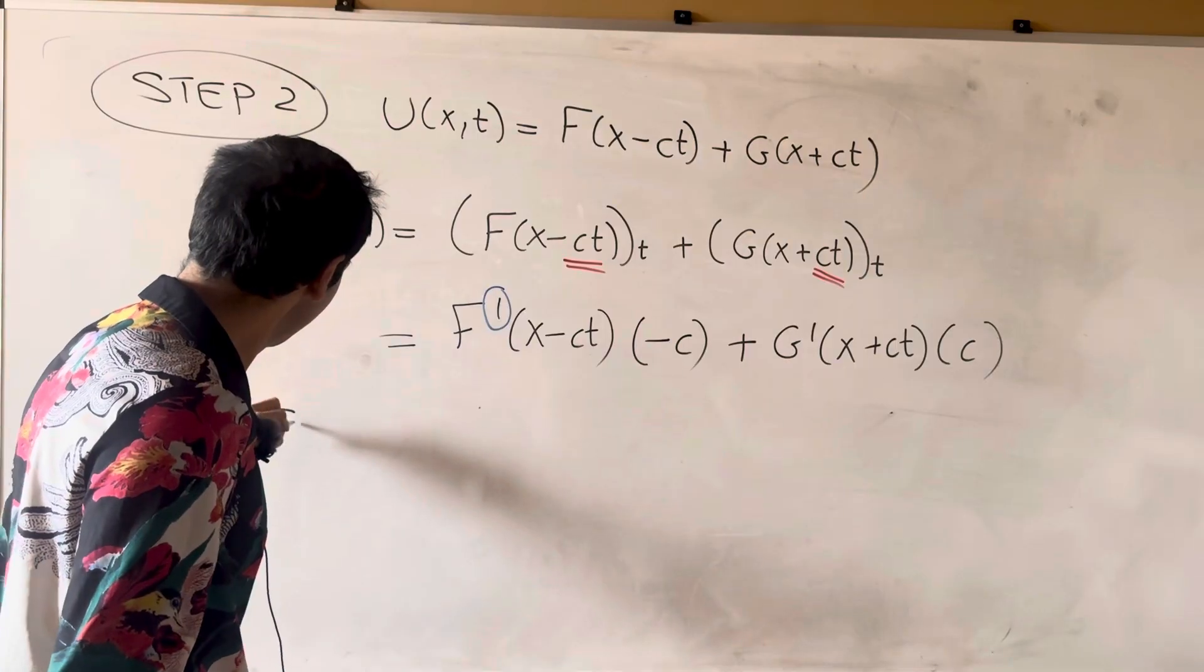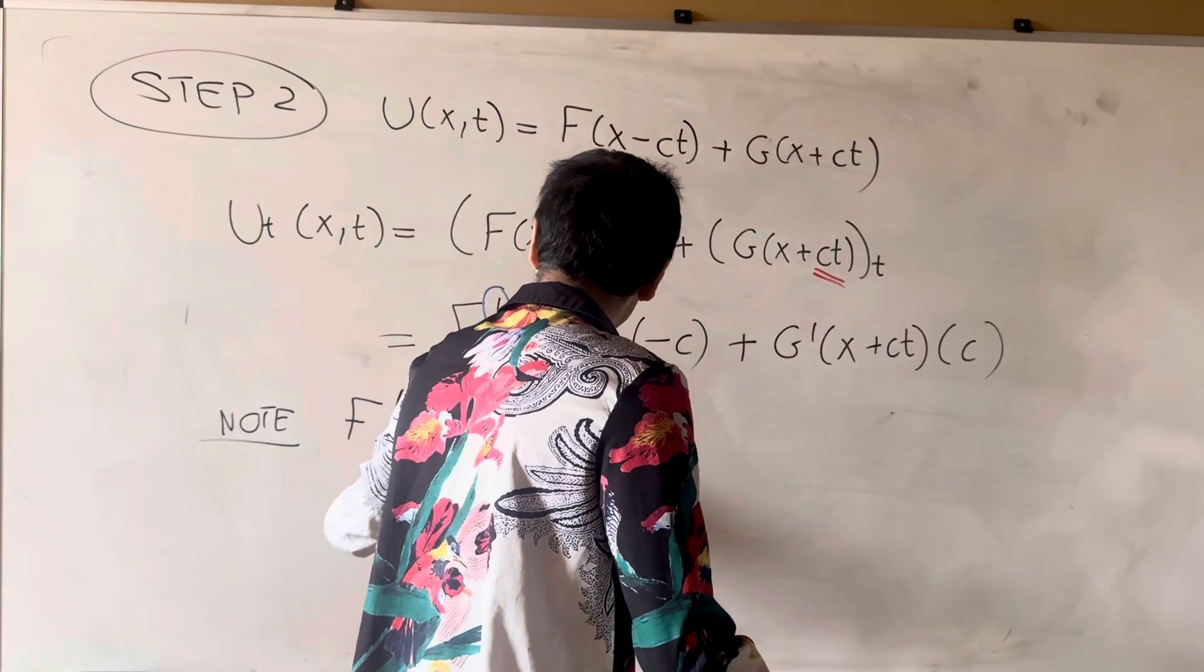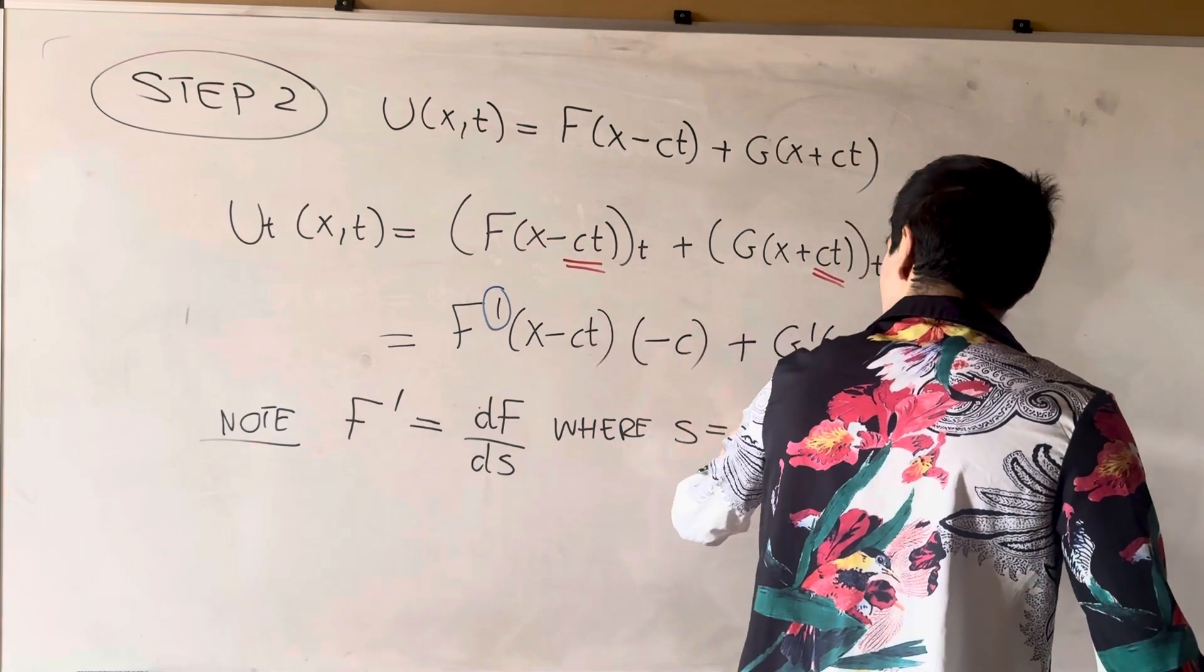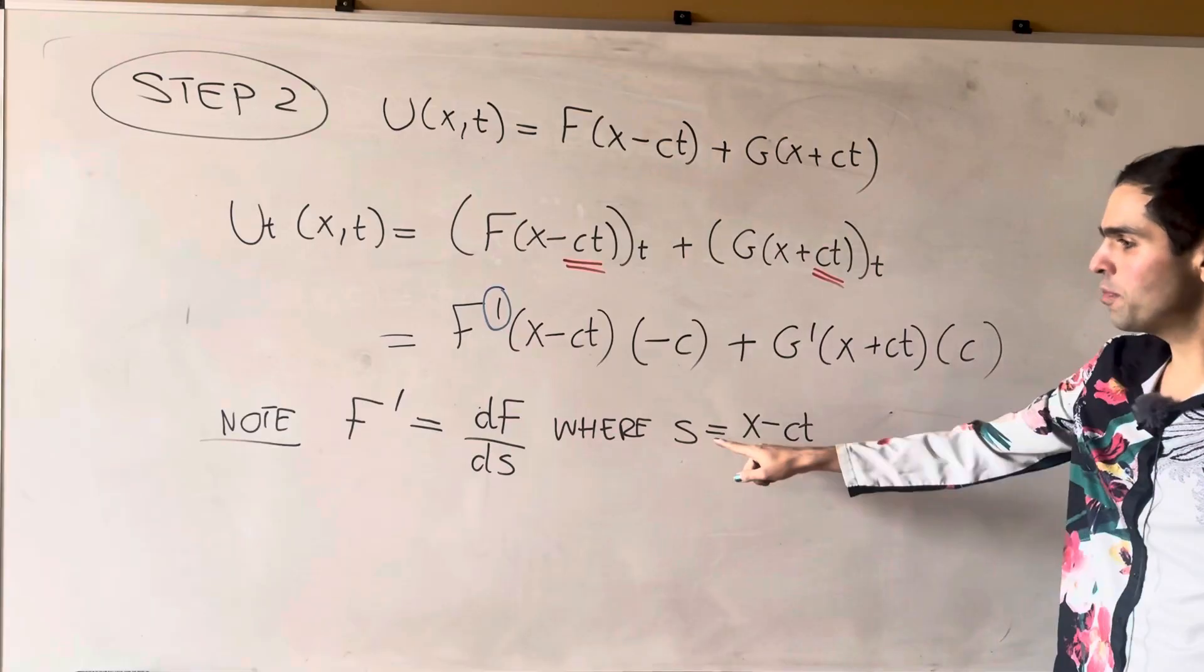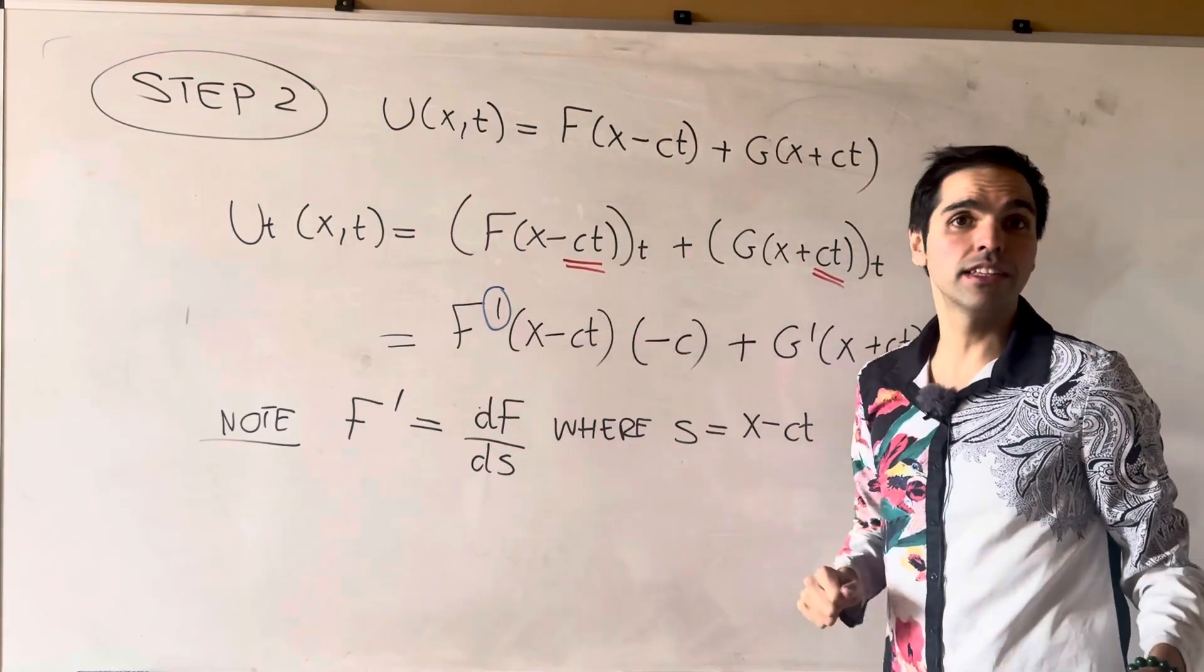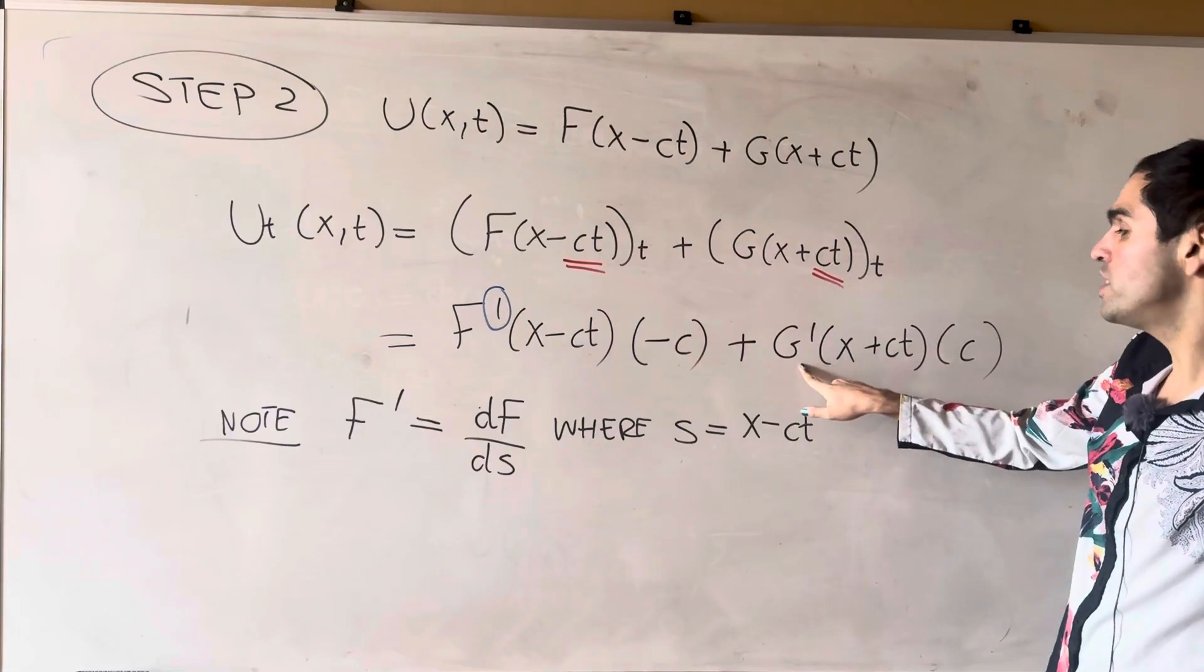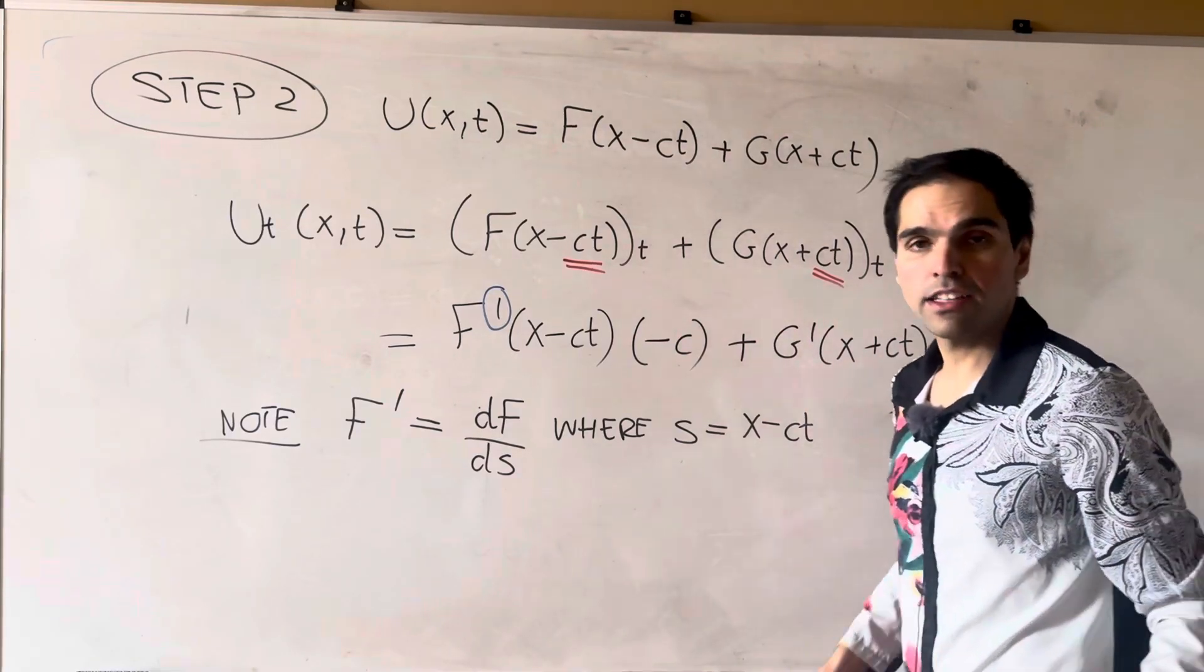So note, really what we mean by f prime is df/ds, where s is x minus ct. So given x and t, this gives us one variable that we call s, and f prime is a derivative with respect to that variable. Same thing with g prime. g prime is a derivative of g with respect to w, where w is x plus ct.